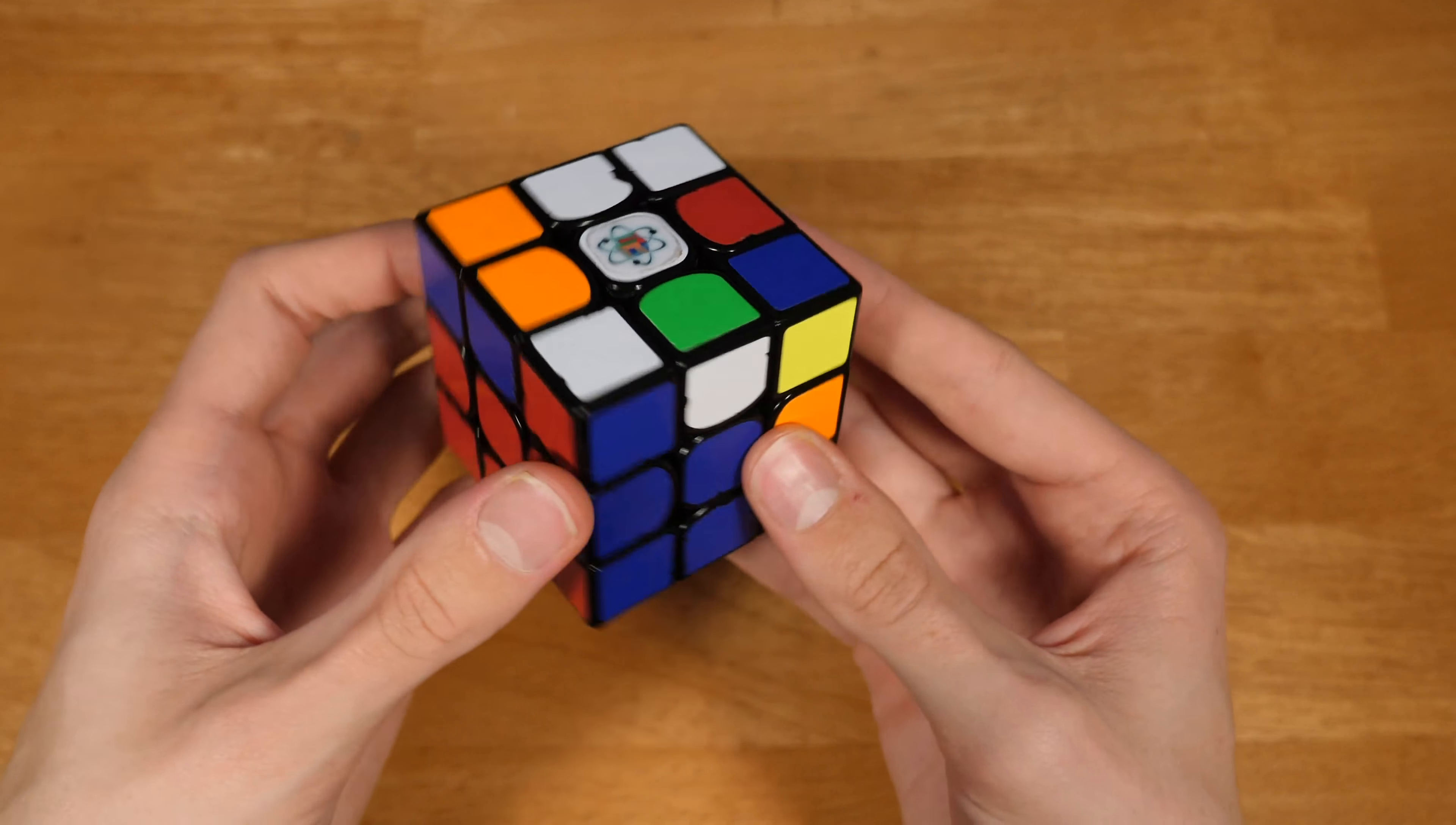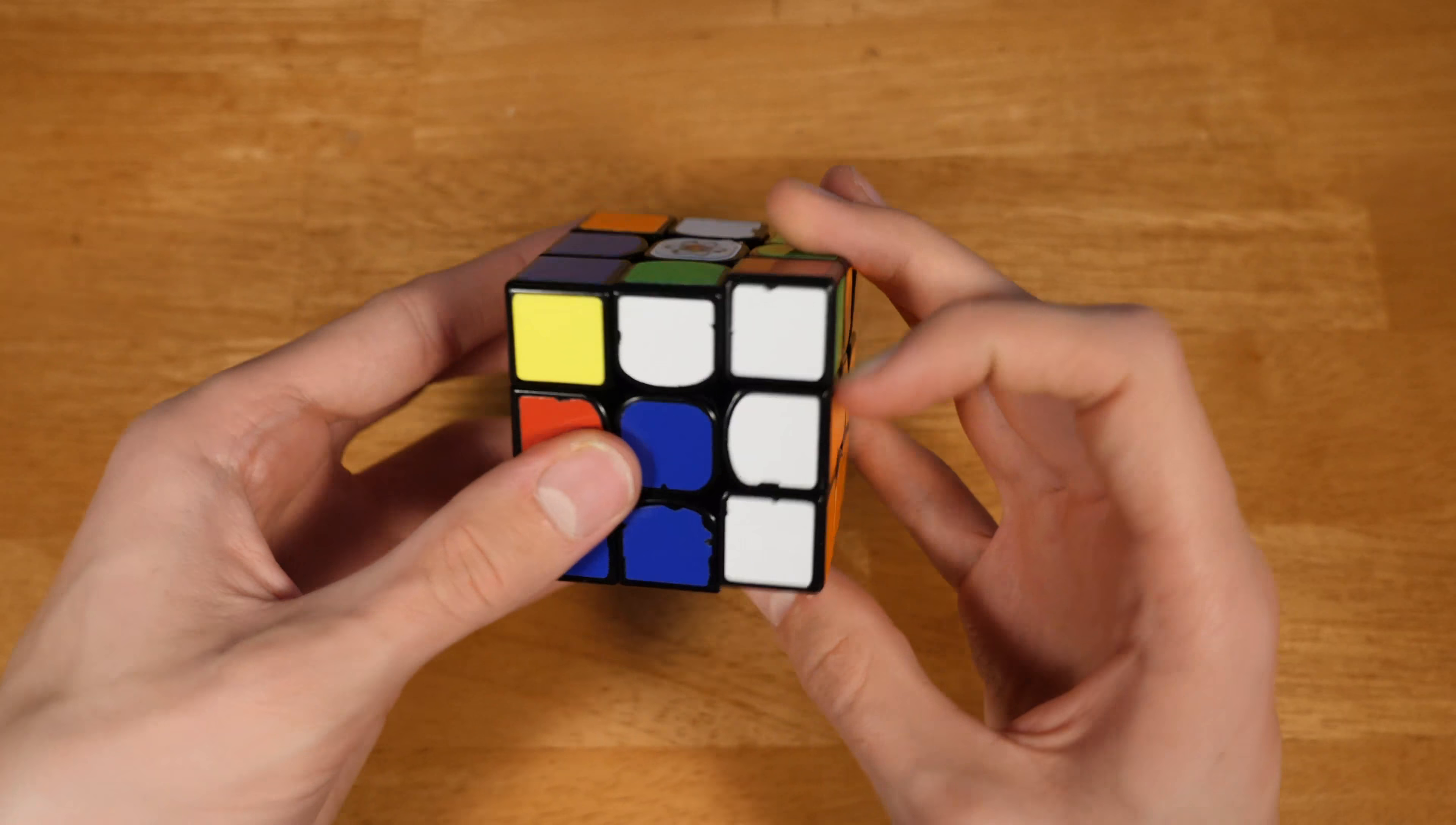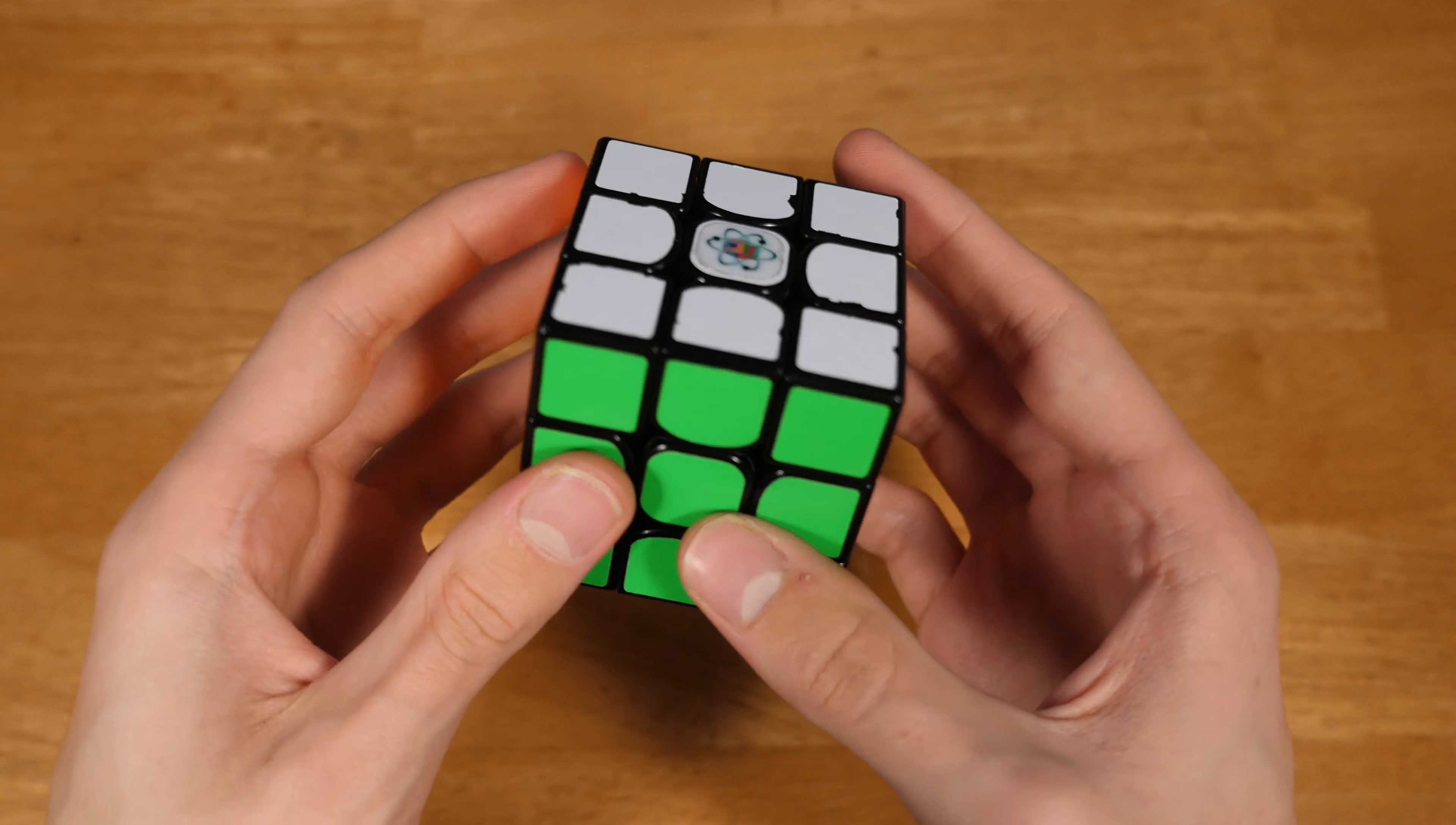Third F2L pair. And it's important to know these cases. You don't want to solve it like this, because then that would give you a U perm. You want to know that if you have these two like this, and this one up here, that's going to give you a skip when all your corners are solved.